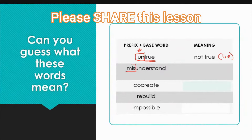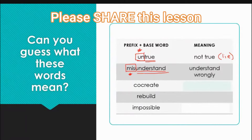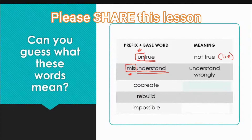Next we have 'misunderstand.' We have our prefix 'mis' and our base word 'understand.' Do you remember what 'mis' means? Mis means not, wrong, or opposite of. So 'misunderstand' means the opposite of understand — to understand wrongly or to not understand. For example, if you are talking to someone and they get the wrong idea about what you are saying, they misunderstood. You misunderstand — you did not understand what was said.